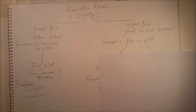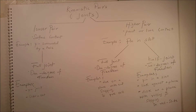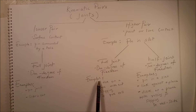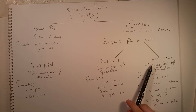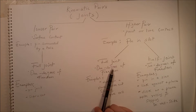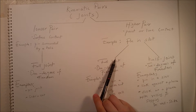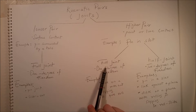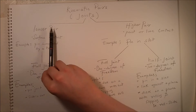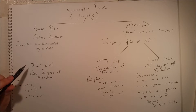Now for the higher pair, we have both a full joint and a half joint. A full joint describes one degree of freedom, while a half joint describes two degrees of freedom. It's important to understand that the higher pair can be broken down into these two categories. For a lower pair, we only have full joints — we do not have half joints.